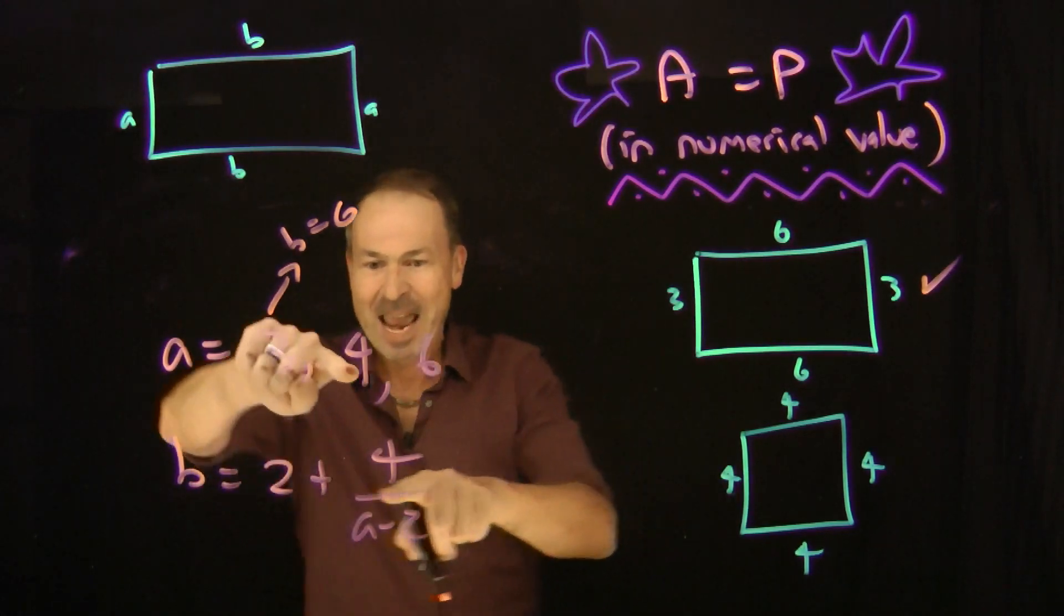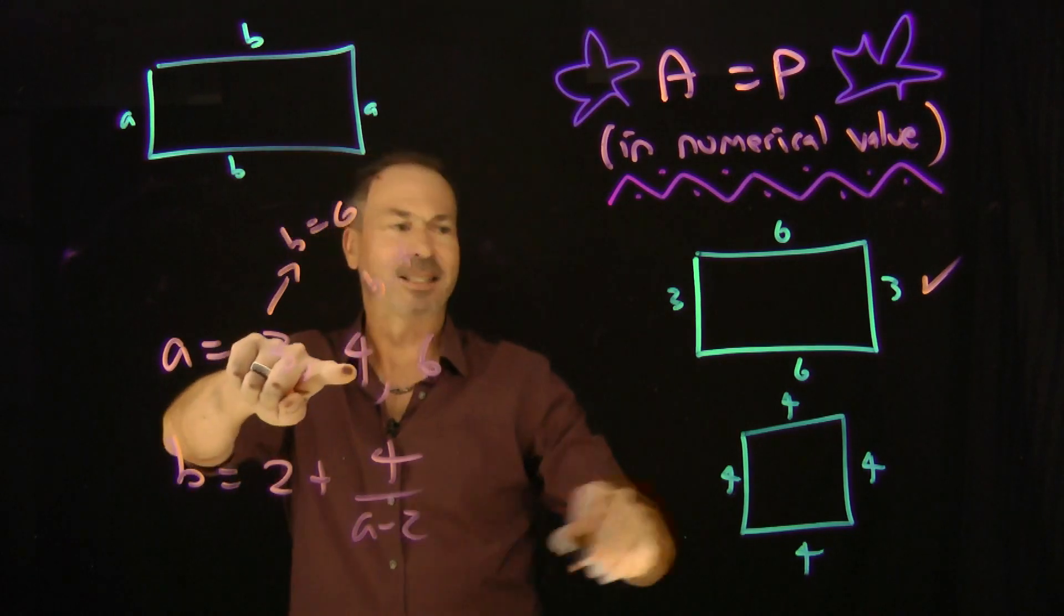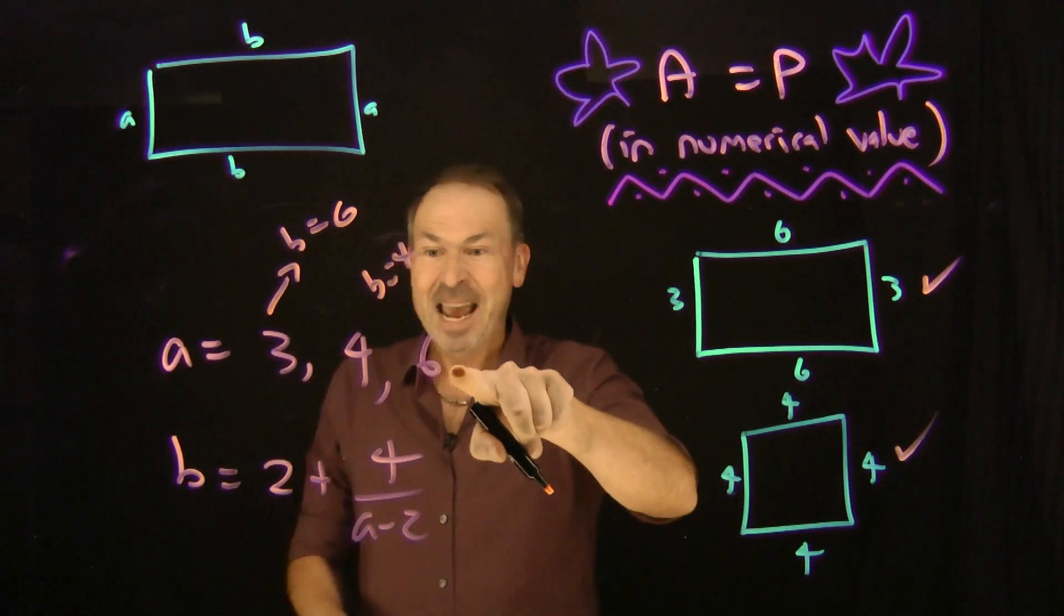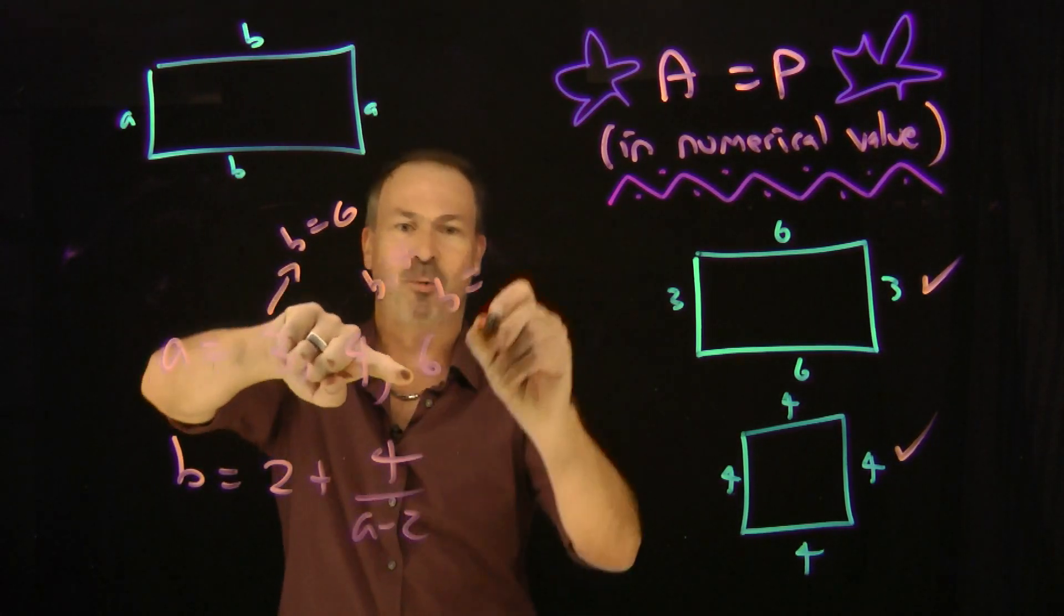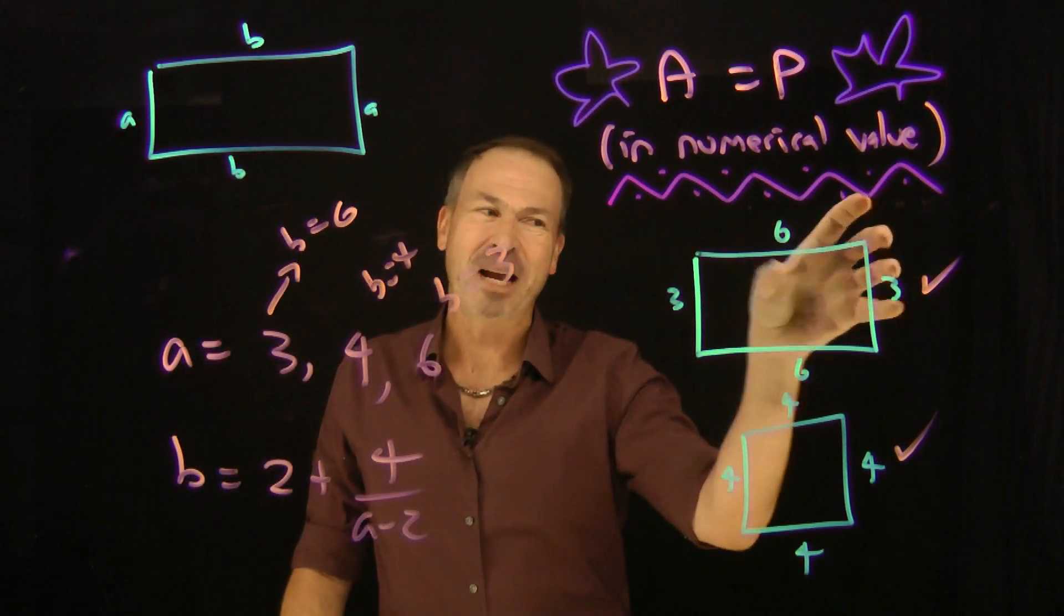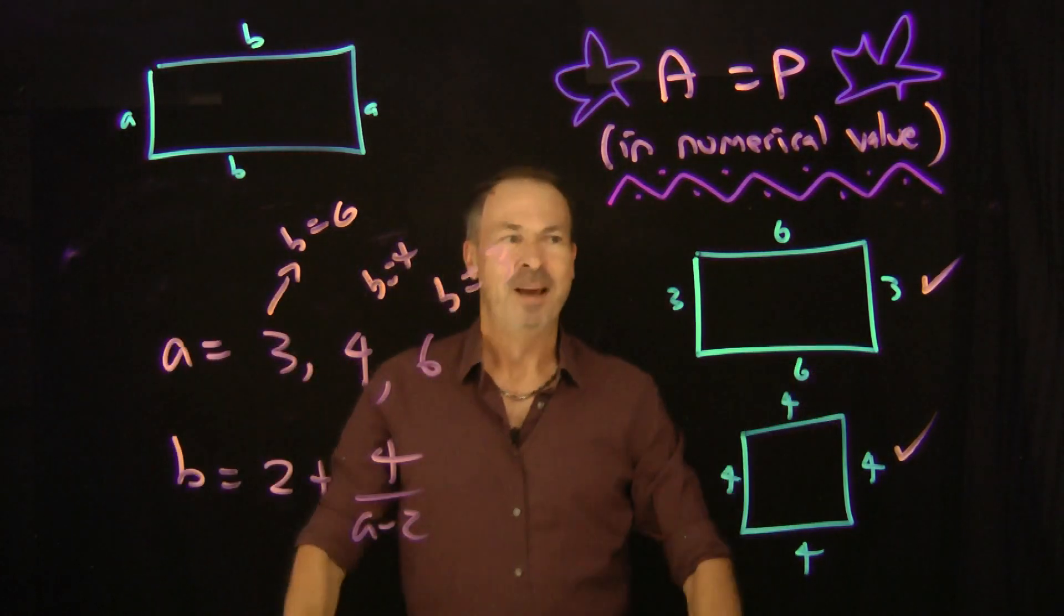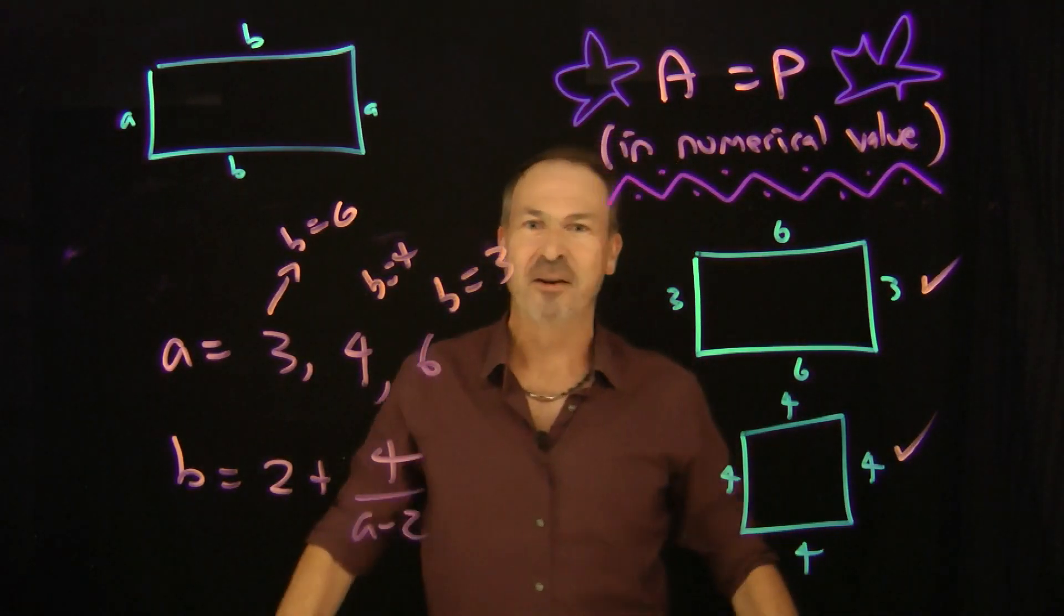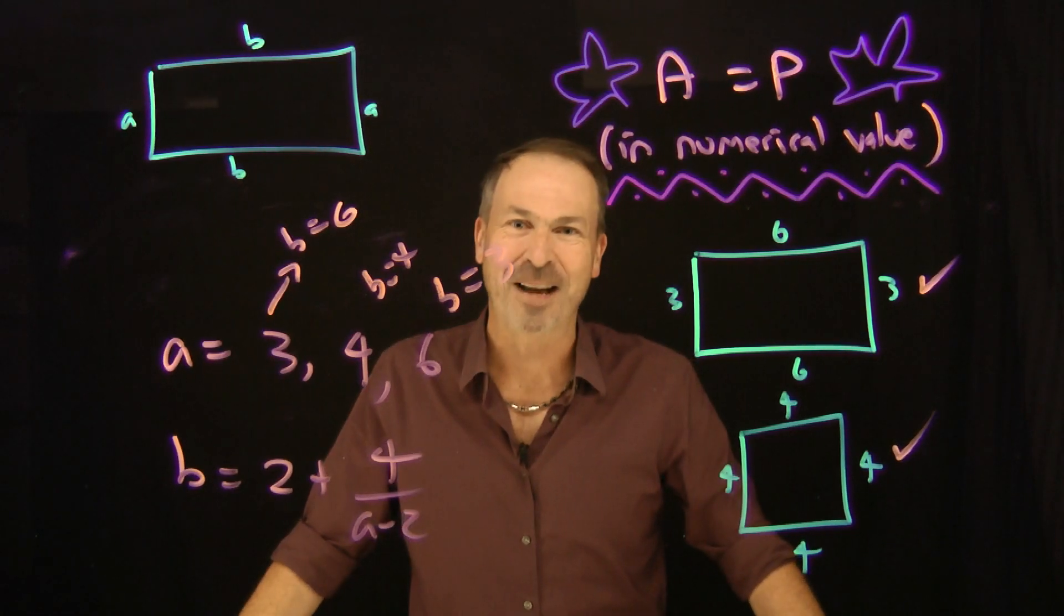If a is 4, I get 2 plus 4 over 2, b would be 4 in that case. We got that one. Looks like I'm getting a third example. If a is 6, I'd get b would be 2 plus 4 over 4, 2 plus 1 is 3. I'll get the 6 by 3 rectangle, the 90 degree rotation of that one. But I think that establishes for sure there's essentially only two examples. These are the only two rectangles with integer side lengths with area equal perimeter, at least in numerical value. Wow!